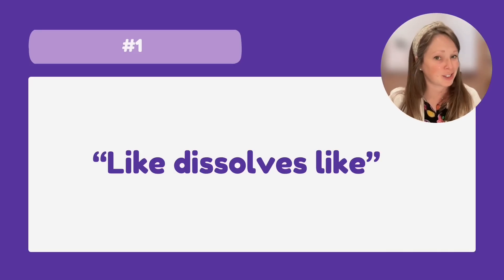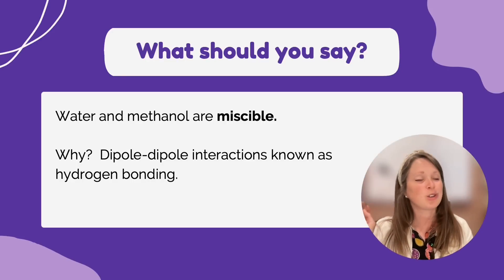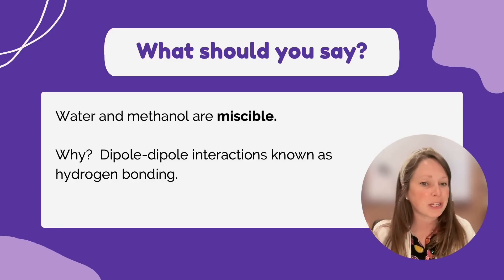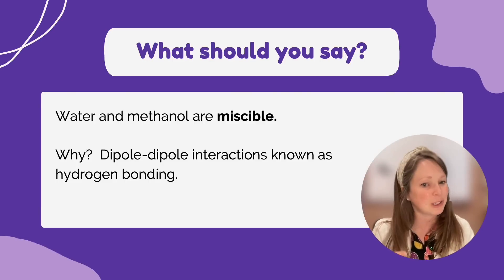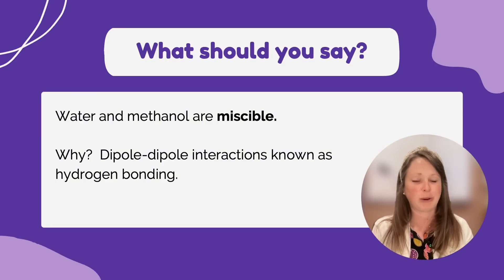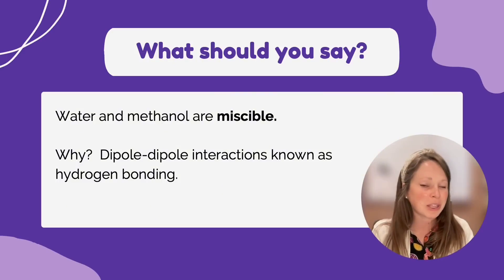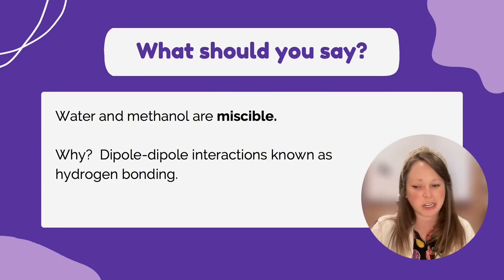Let's get started with 'like dissolves like.' That phrase can help you remember what's going on, but you need to use more specific words instead. Water and methanol are both polar substances, and therefore they are going to be miscible in one another — meaning they will be soluble in each other and will dissolve in each other. However, you don't want to say 'like dissolves like.' Talk about the interactions between those polar molecules and discuss what's actually happening in solution.